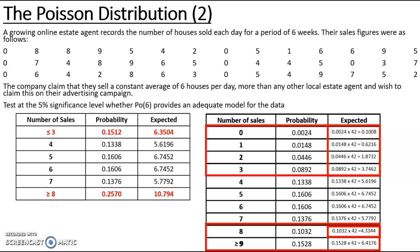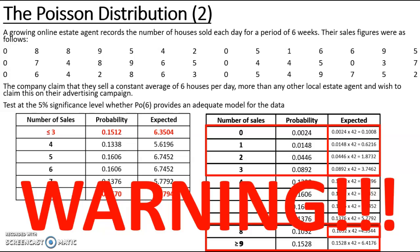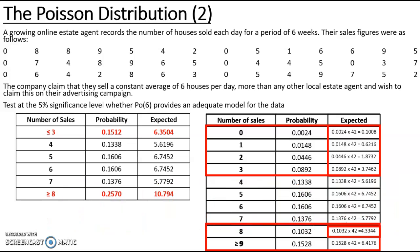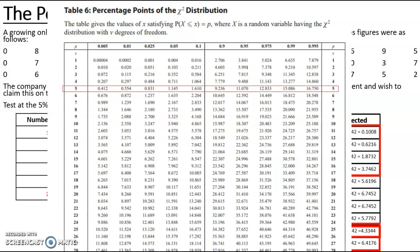Because I have reduced the number of categories, I have also changed my critical value. Instead of ten categories (0 through 9), I now have six categories: less than or equal to 3, 4, 5, 6, 7, and greater than or equal to 8. So my new degrees of freedom is 5. The 0.95 percentage point stays the same, and my critical value has reduced to 11.070.